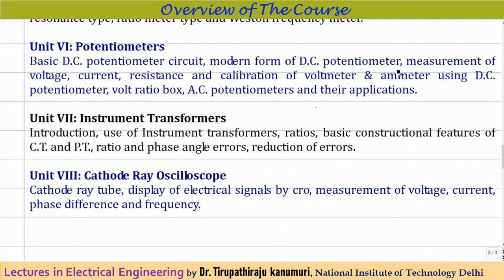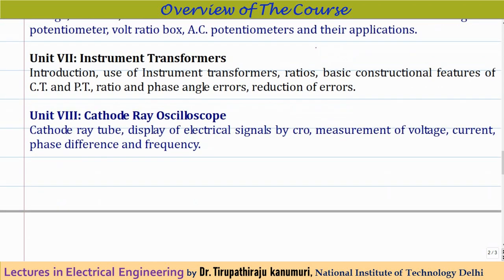Module 6 covers potentiometers. We will discuss the DC potentiometer circuit, modern forms of DC potentiometers, and measurement of voltage, current, resistance, and calibration of voltmeters and ammeters using potentiometers. We will also cover why potentiometers are used as standard meters for standardizing or calibrating new instruments, the voltage ratio box, and AC potentiometers.